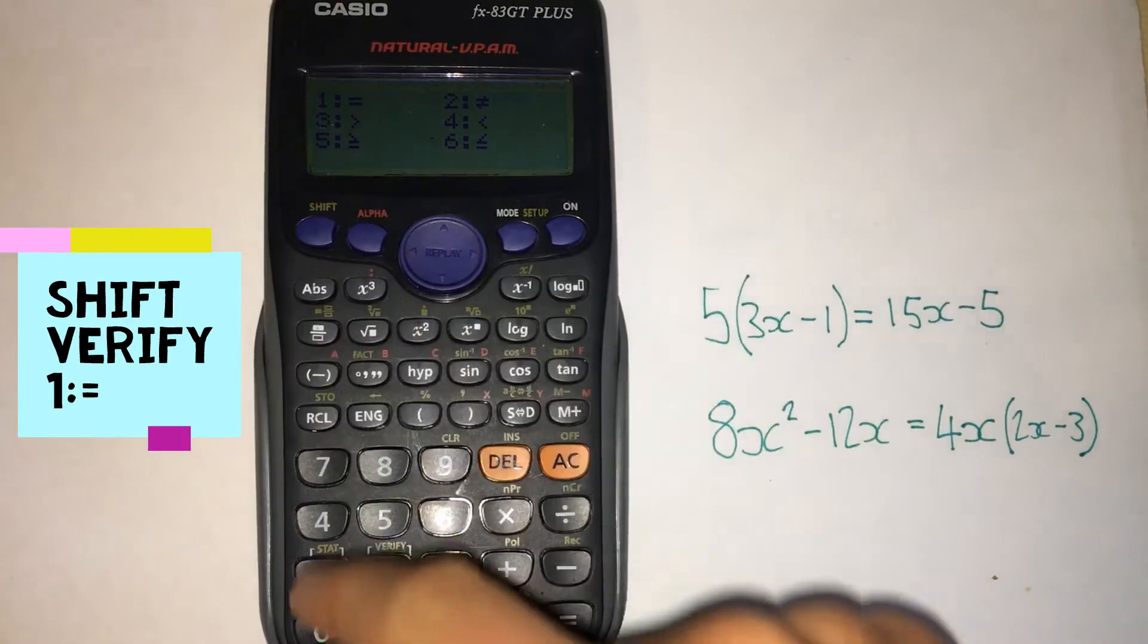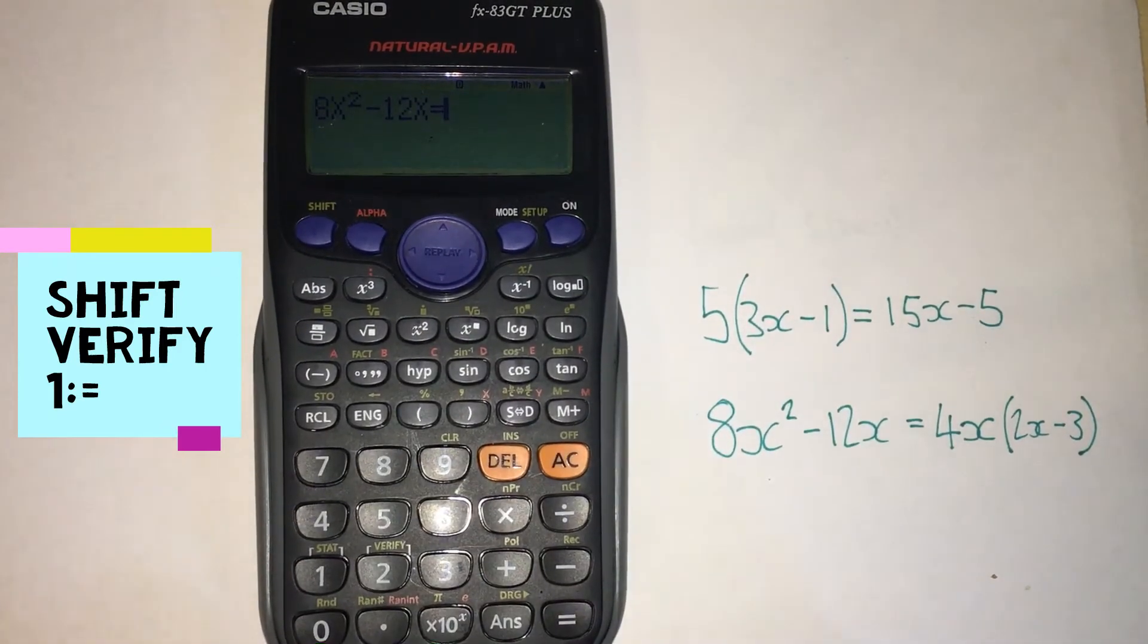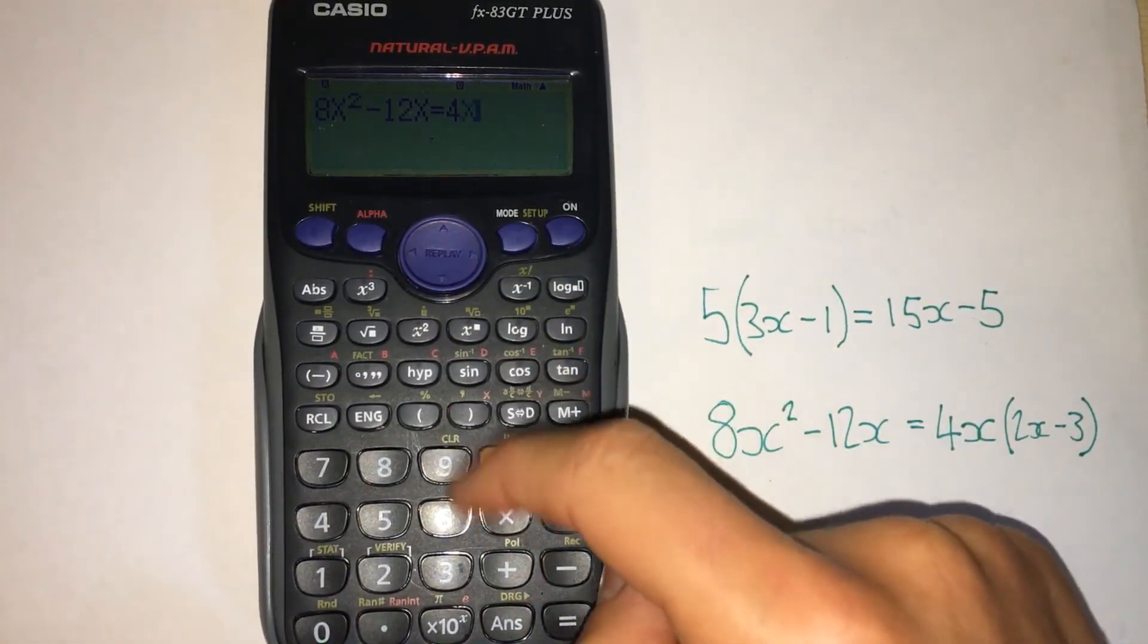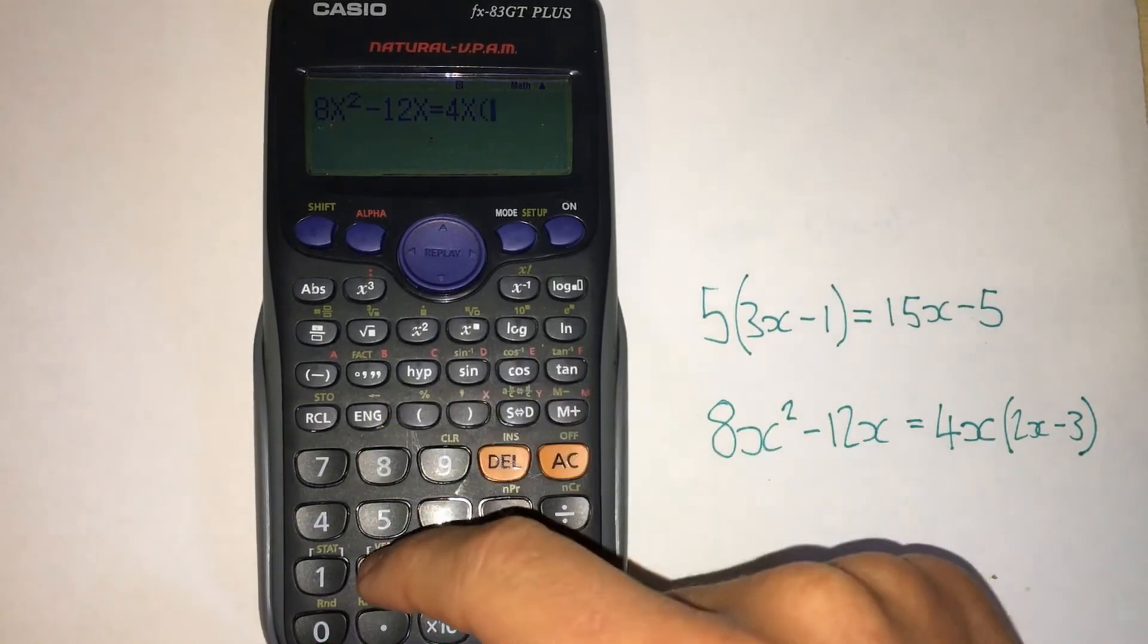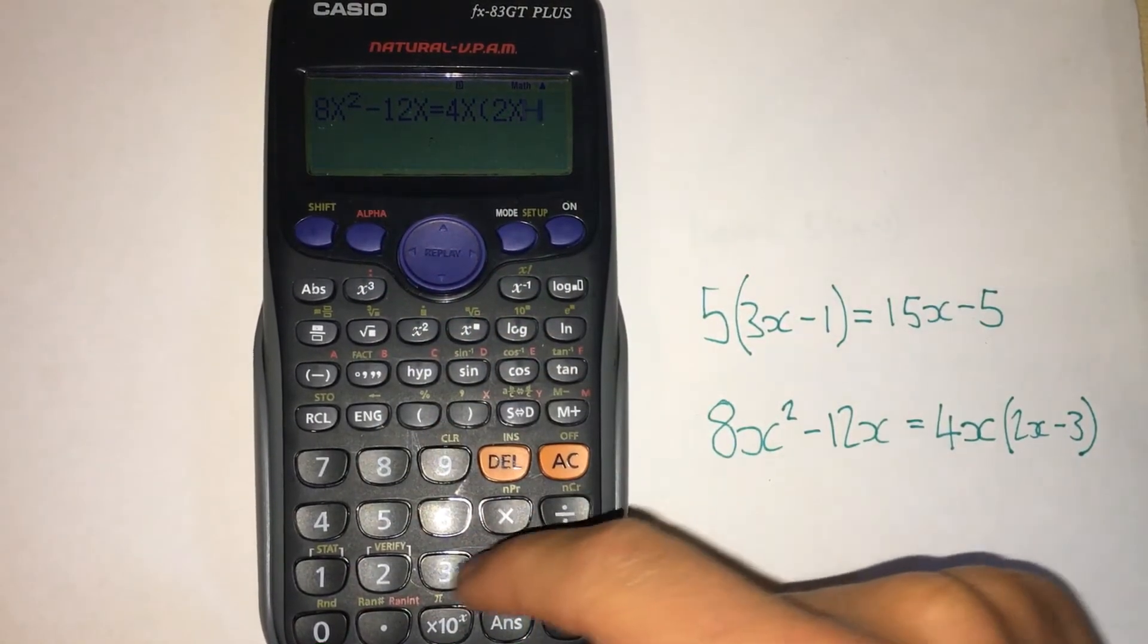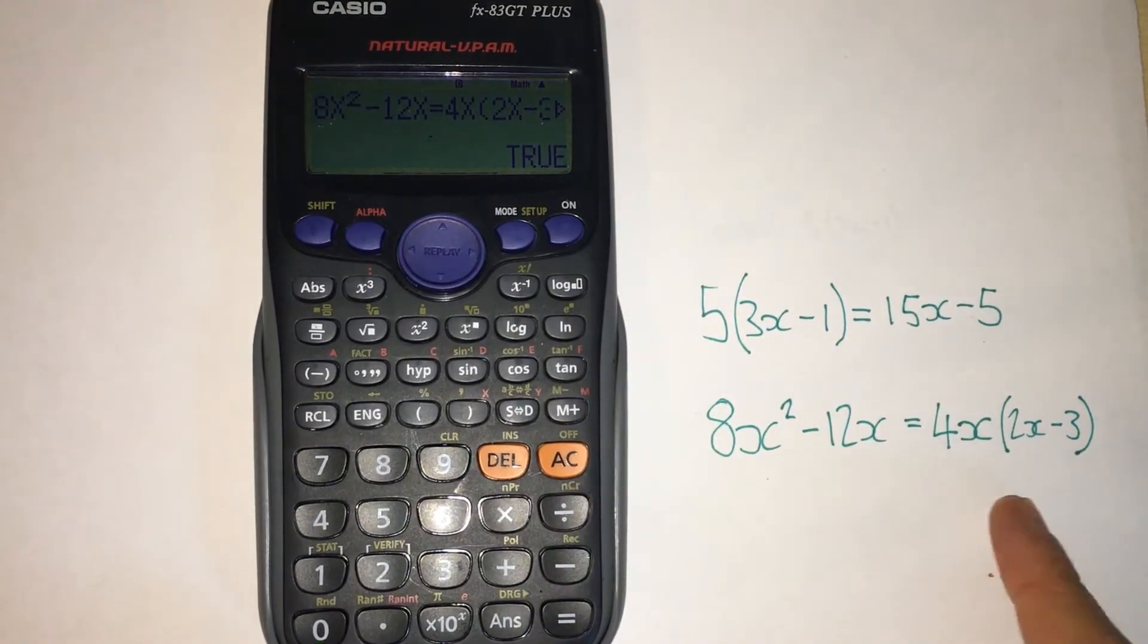And then we've got to go not this equals, we've got to be in the verify function, so we press shift, number two, use that equals there which is by pressing number one. And then that equals four alpha x, and then a bracket, two alpha x minus three, close the bracket. Press this equals and it says it's true, so my answer is correct.